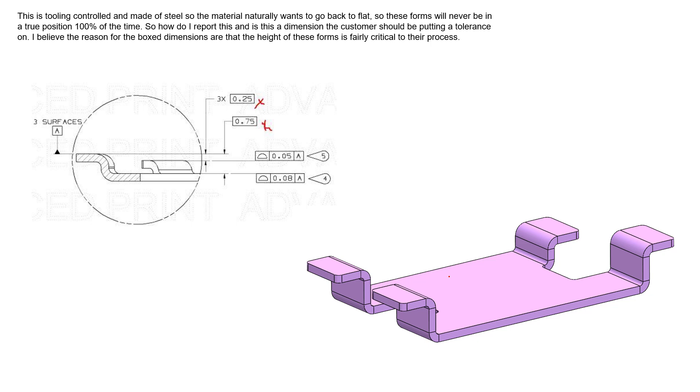It's the classic case of the basic dimensions don't have tolerances because they tell us where the surface should be ideally. They're giving us the target where we center the zone for profile of a surface on.